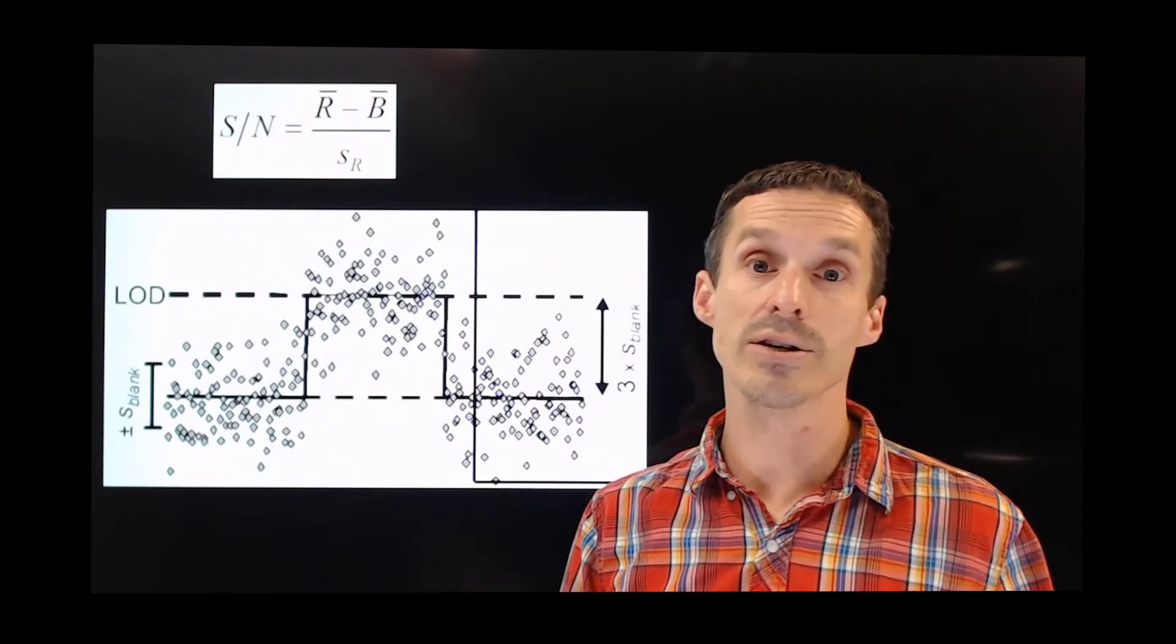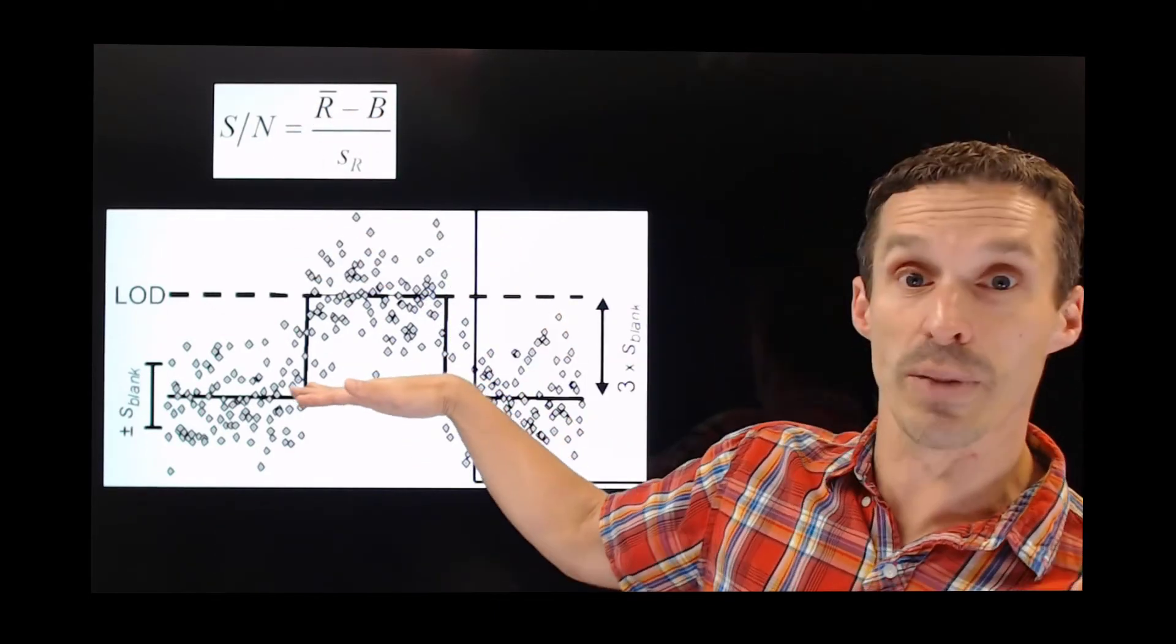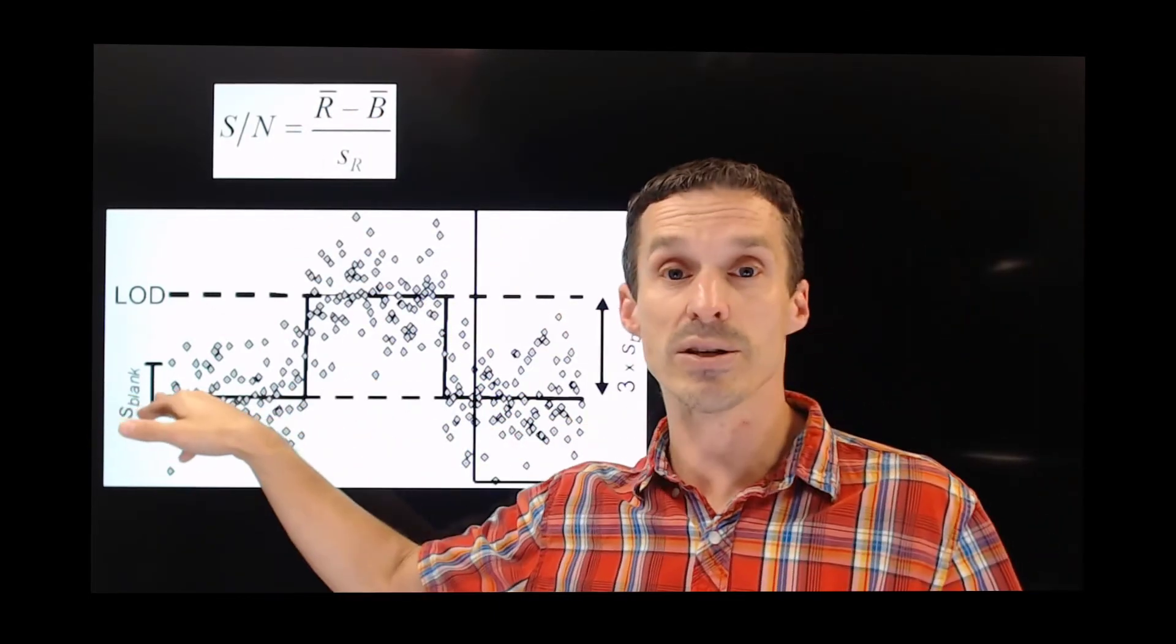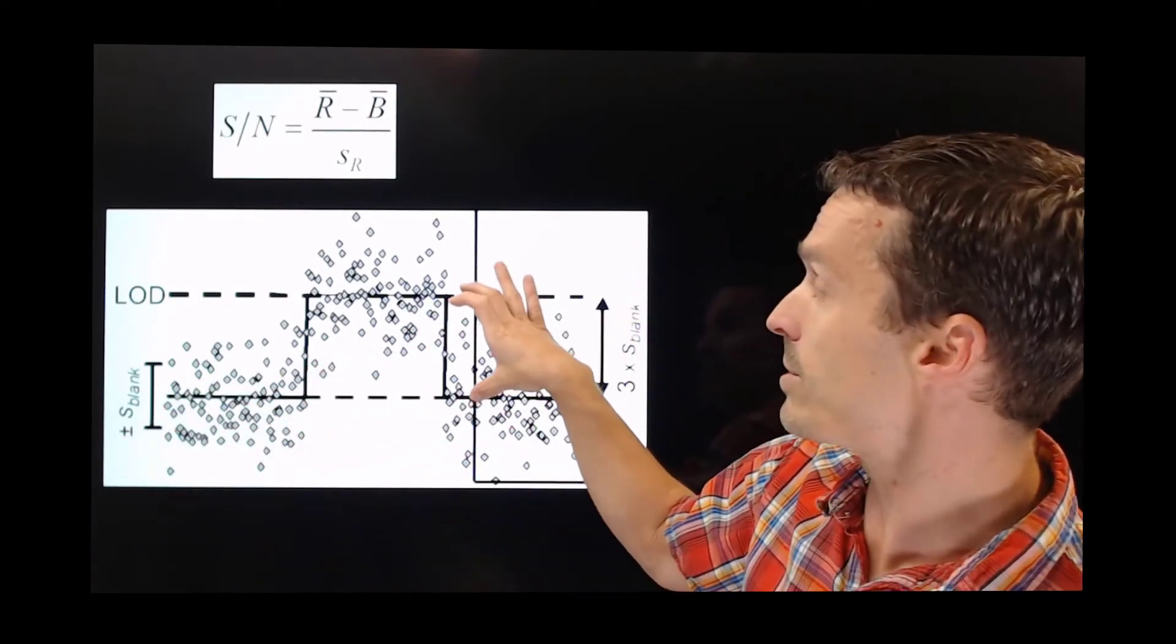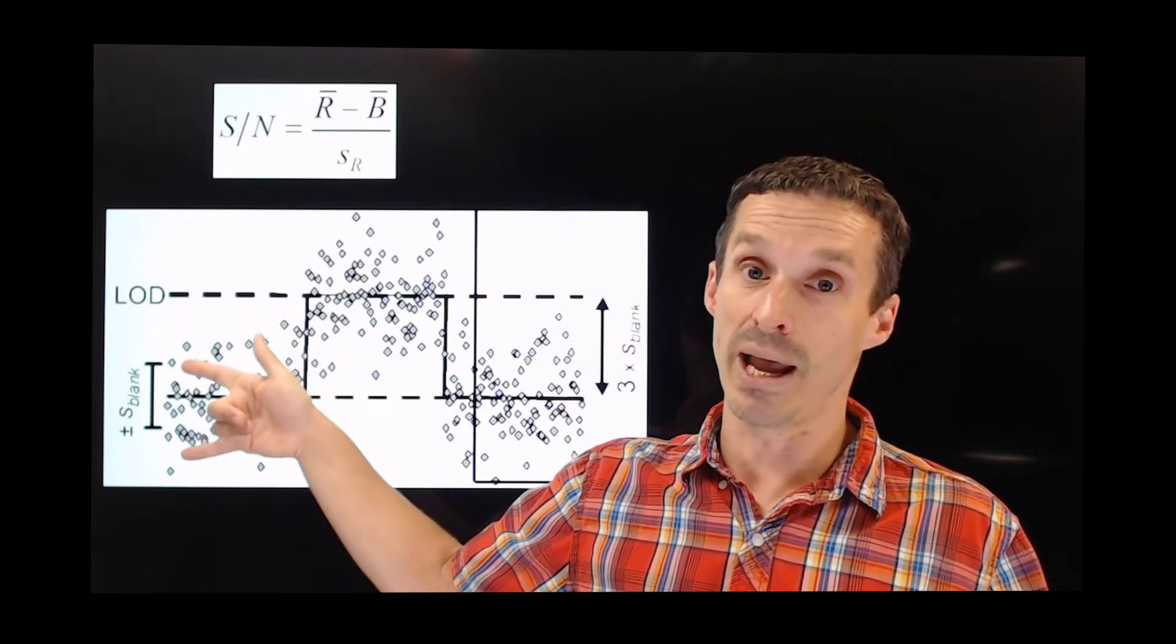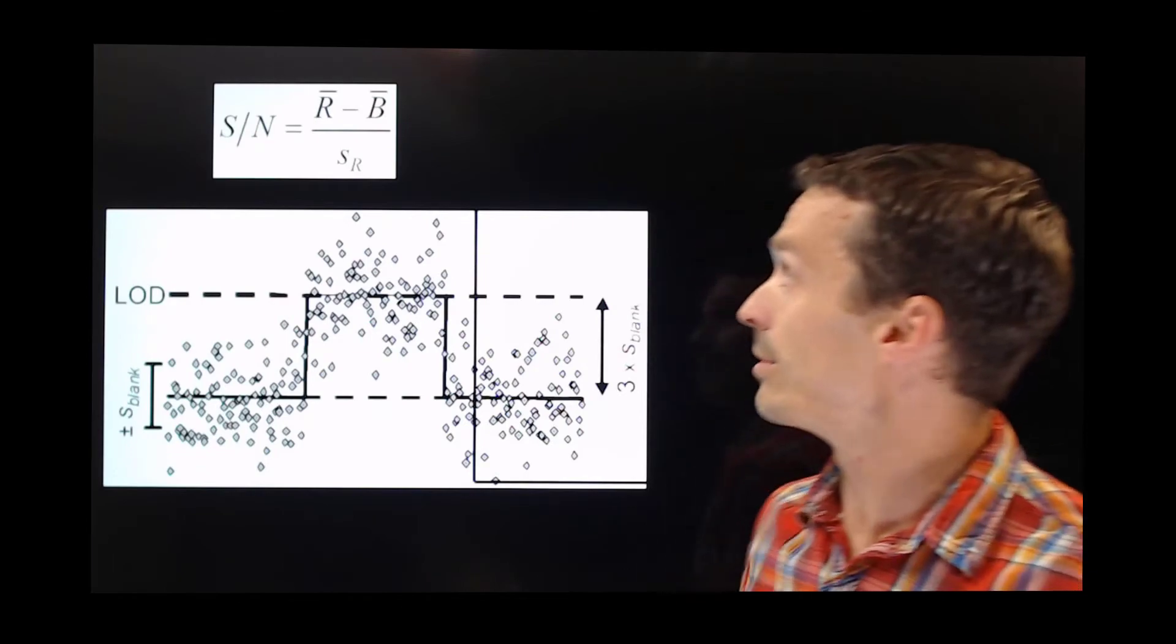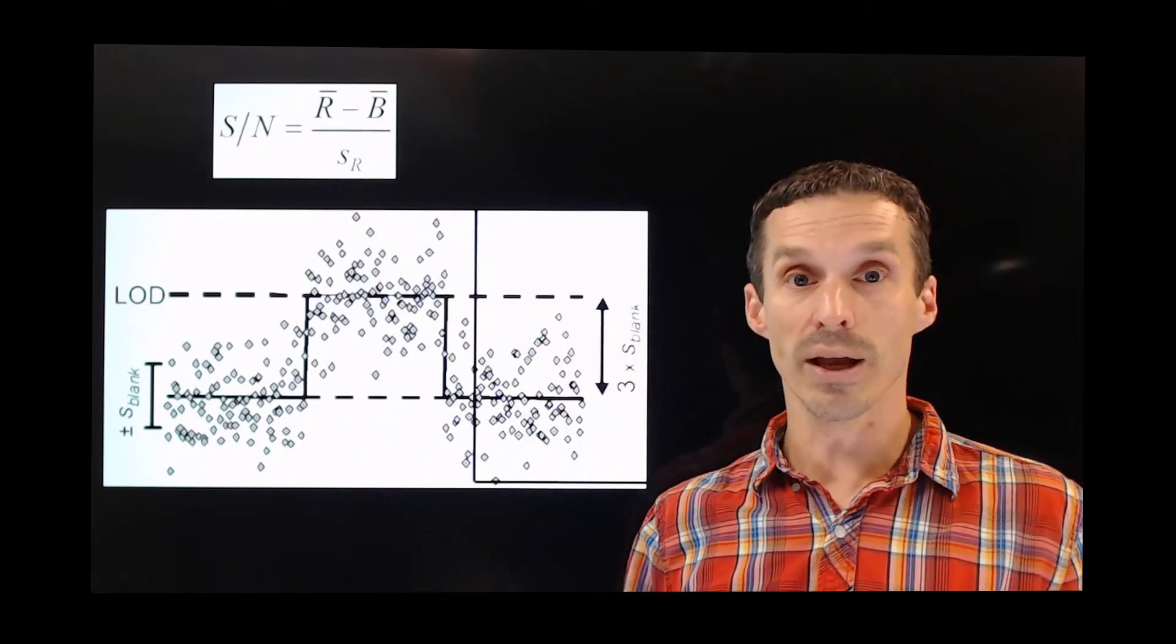The signal to noise ratio is reflected in the difference between the response value and the baseline. The baseline could be zero, but it doesn't matter. So you're looking at this difference over the standard deviation of our blank. So the blank, the background can really reflect the same thing. So that's what this equation relates to.